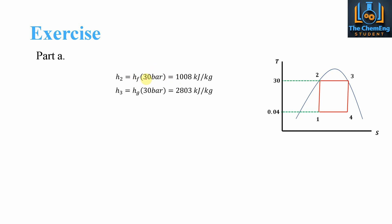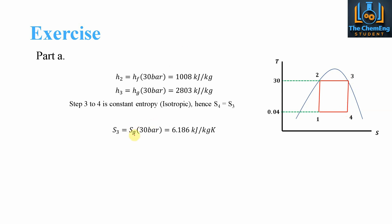From step 3 to 4 is constant entropy — isentropic — so S4 must equal S3. S3 is the entropy of the vapor at 30 bar, which is 6.186 kJ/(kg·K). We can then express S4 using the mixture equation: S4 = x4·Sg + (1 − x4)·Sf, where Sg and Sf are evaluated at 0.04 bar. Since S4 = S3, we substitute known values to find x4.